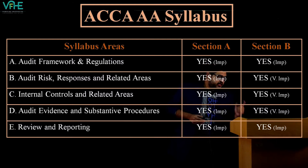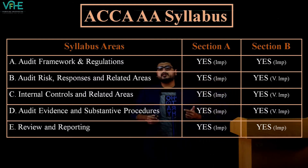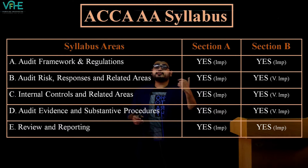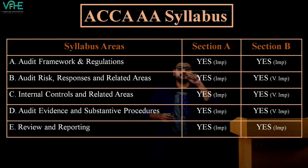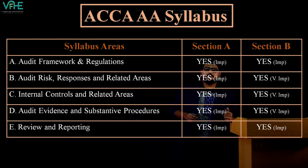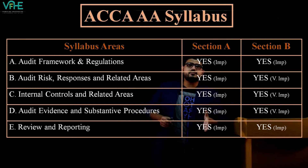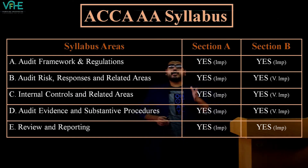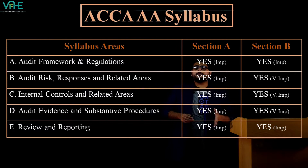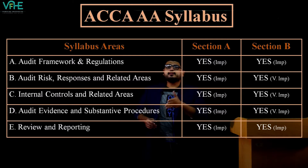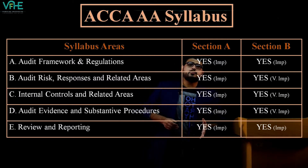We will cover all sections of the syllabus, but Sections B, C, and D are really very important. The syllabus areas are displayed in the sequence of the audit process — the audit cycle — which is the sequence in which we perform the audit.